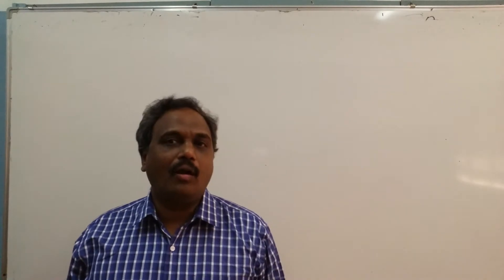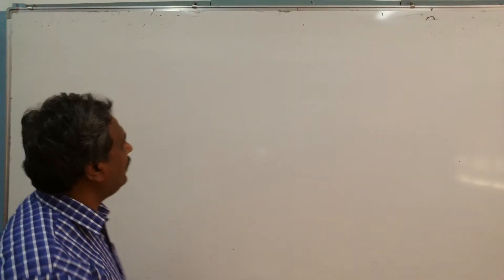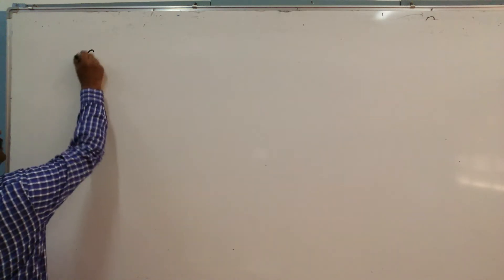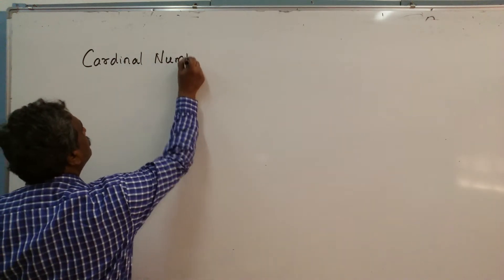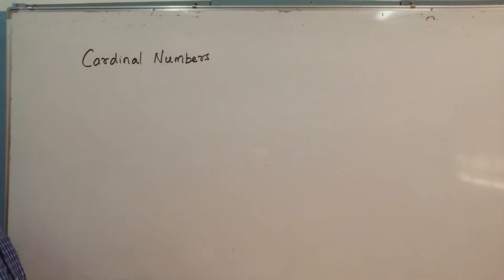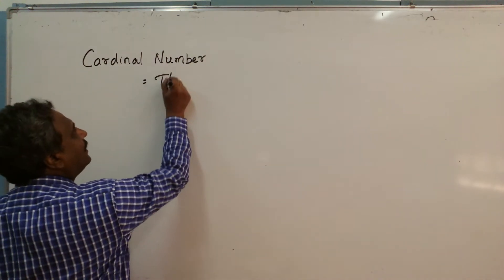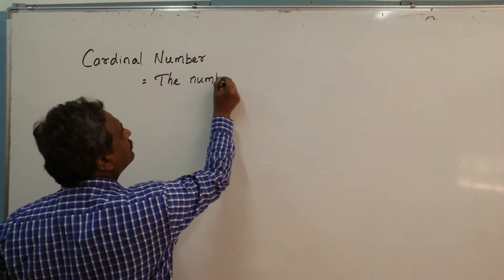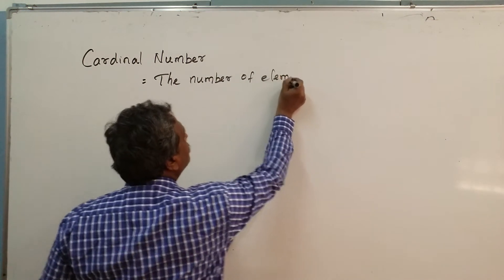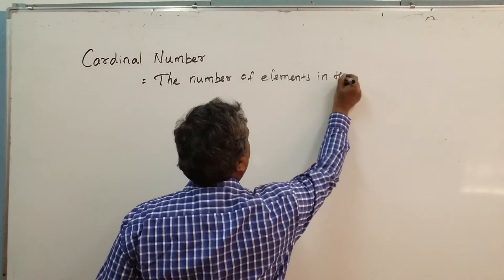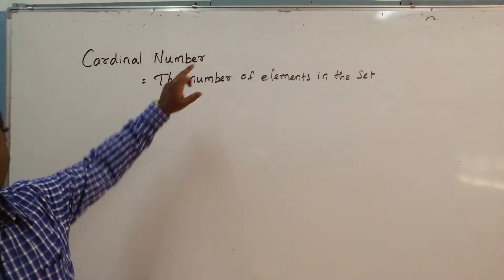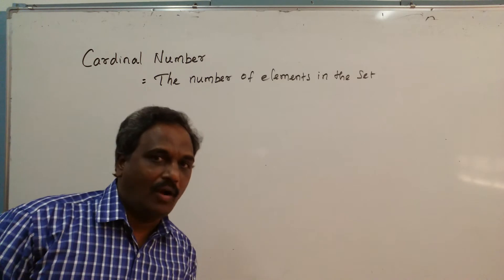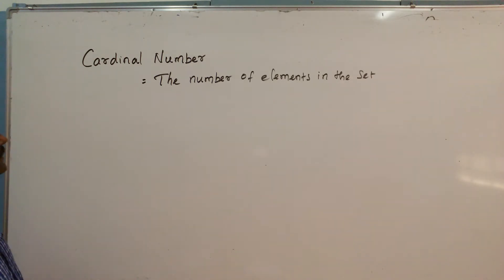Good morning students. In this video we are going to check the next idea of set called cardinal numbers. We are going to review cardinal numbers. The meaning of cardinal number is nothing but the number of elements in the set. The number of elements in the set is called the cardinal number.